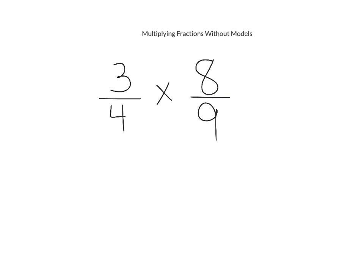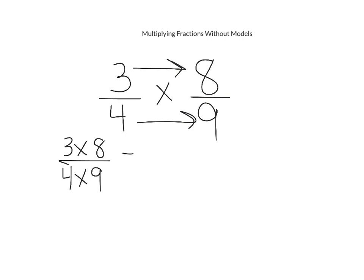Now we're going to take a look at how to multiply fractions without using models. There are two different strategies we can use. The first strategy is multiplying our fractions first and then simplifying at the end. Whenever you multiply fractions, all you have to do is multiply straight across. This means that we would multiply three times eight and four times nine. When we multiply three times eight, twenty-four becomes our numerator. And when we multiply four times nine, thirty-six becomes our denominator.